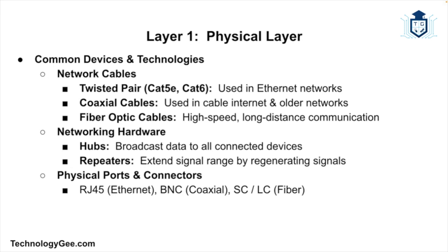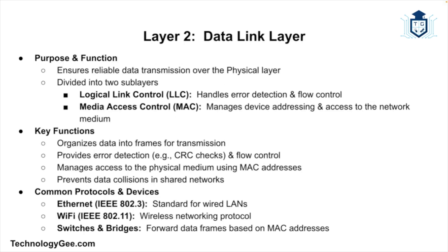Let's move on to Layer 2, known as the Data Link layer. The Data Link layer ensures reliable transmission of data over the Physical layer by establishing error detection and correction mechanisms. It is divided into two sub-layers: the Logical Link Control (LLC) and the Media Access Control (MAC). Its key functions include organizing data into frames for transmission, providing error detection and flow control, and managing access to the physical medium using MAC addresses.